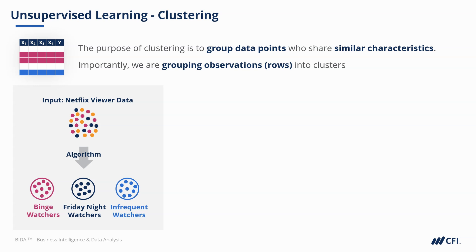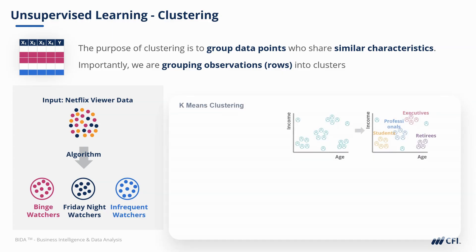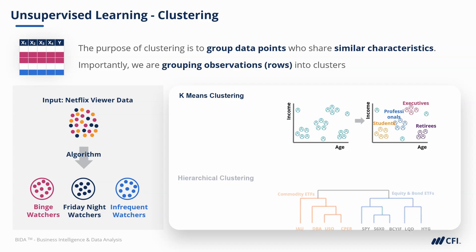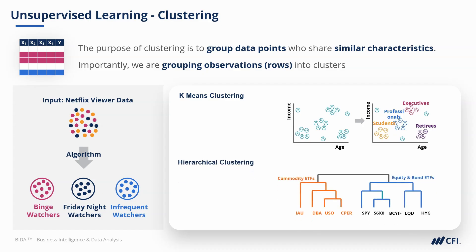There are two common techniques used here. One is K-means clustering, which is really helpful to identify groups and trends in large data sets. The second is hierarchical clustering, which is usually visualized as a dendogram.